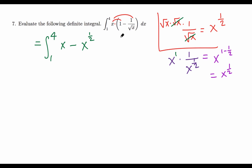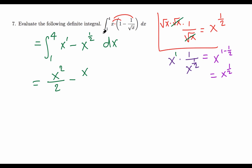So we have the integral from 1 to 4 of (x minus x^(1/2)) dx. We can integrate term by term. The antiderivative of x is x²/2, and the antiderivative of x^(1/2) is x^(3/2) divided by 3/2.